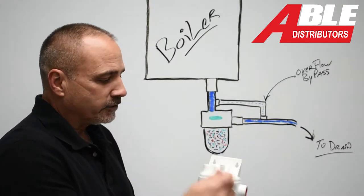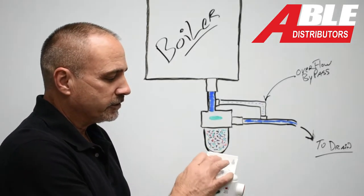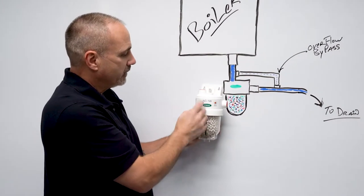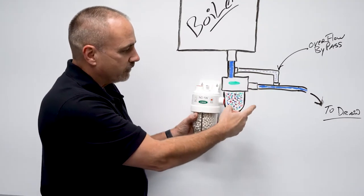It's a threaded fitting, so you can screw in three-quarter inch PVC fittings. You put this below the boiler, condensate comes in, gets neutralized, flows out.